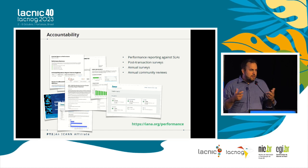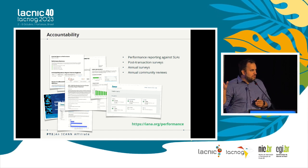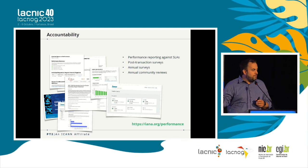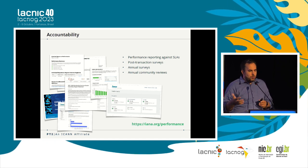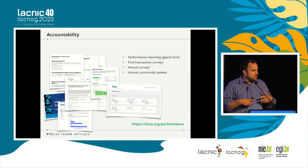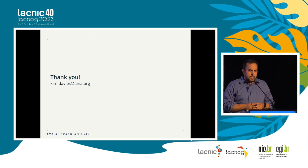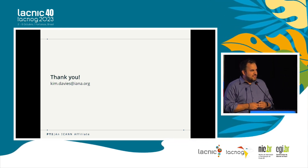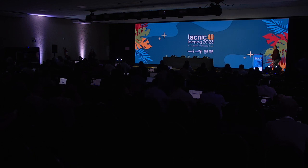Accountability is a very important part of how we operate IANA. We have all sorts of mechanisms available to monitor our performance and get feedback from our customers, including post-transaction surveys, annual surveys, monthly reports, annual reports, and the like. The RIR community conducts an annual process of reviewing the work we do. You can find more at IANA.org/performance. Thank you very much for your time — I know I've taken a bit of time out of the next session, but I appreciate you listening.